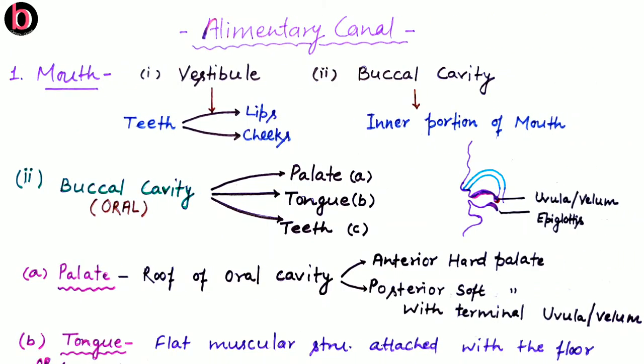In this video lecture we will discuss about the early part of the alimentary canal. In the previous video lecture we discussed the details of the human digestive system, where we covered two parts: the alimentary canal, also known as the gastrointestinal tract or gut, and the digestive glands. Under the alimentary canal we discussed parts like mouth, pharynx, esophagus, stomach, and intestine.